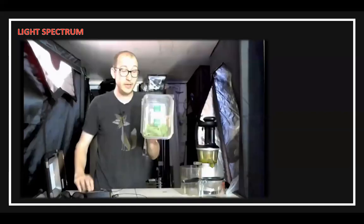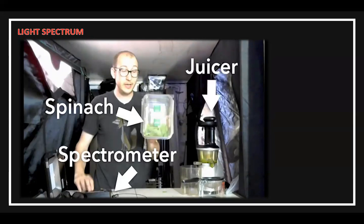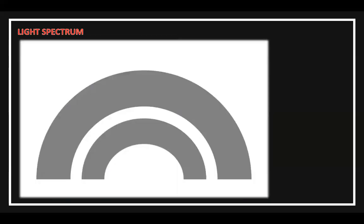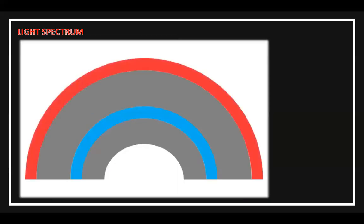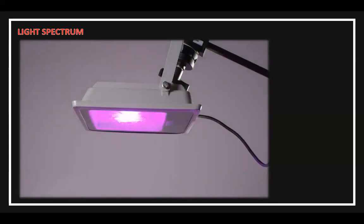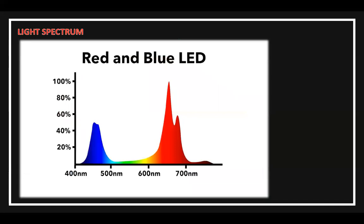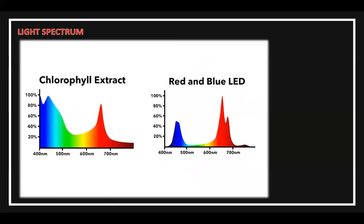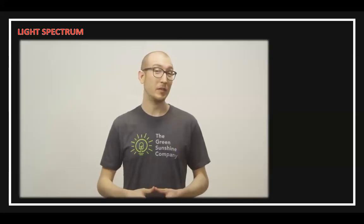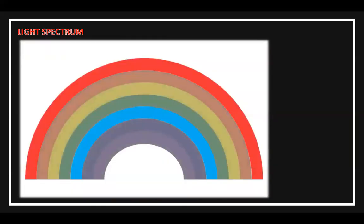I actually did this experiment in my own basement using spinach, a juicer, and a spectrometer, and the chart shown is the result of that experiment. Based on these results, you can see where people got the idea that plants only use red and blue light. Here's a purple grow light that only puts out red and blue light. It exactly matches the chlorophyll absorbance chart, which looks great on paper like it's the perfect grow light spectrum. But in the real world, growers didn't get the best results. The reality is Mother Nature doesn't leave anything to waste — plants need a full spectrum of light to perform their best.